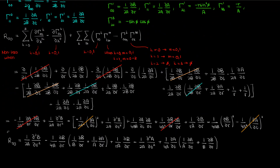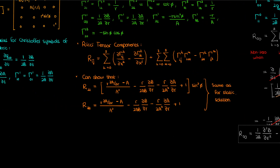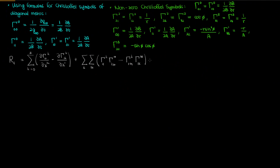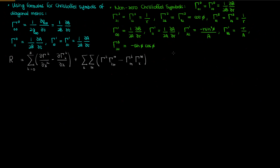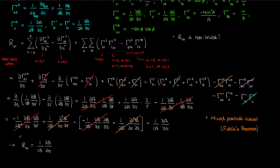The R₀₀ component is given by the following expression — I've worked through the steps individually, starting with nonzero terms, then expanding, evaluating derivatives, and simplifying. You're welcome to pause and go through the calculations yourself. Similarly, after extensive calculations shown on screen, the R₁₁ component will be given by the following. One special feature of our non-static metric is that the Ricci tensor isn't entirely diagonal: there's an off-diagonal component R₀₁ (equal to R₁₀ by symmetry), which when you apply the Ricci tensor formula gives the expression shown.